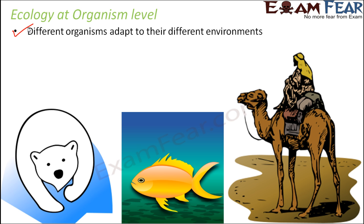Think of a polar bear. Where do we see them? They are found in the polar regions which are covered with snow all the time. They are able to withstand extreme cold climates, and that is why they have fur on their bodies and small ears to keep them warm. Since they are adapted to live in the polar regions, that is why they stay there.